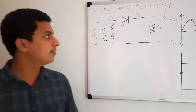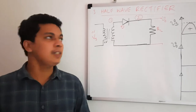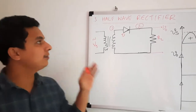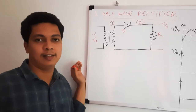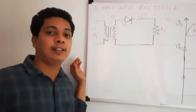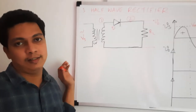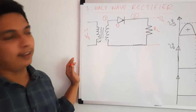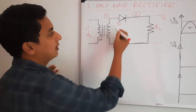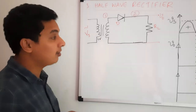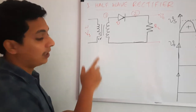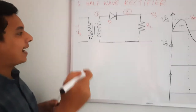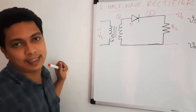In this part, we will first see rectification. The first circuit is the half-wave rectifier, and the main component in rectification is the diode. What does a diode do? What are the characteristics of a diode?